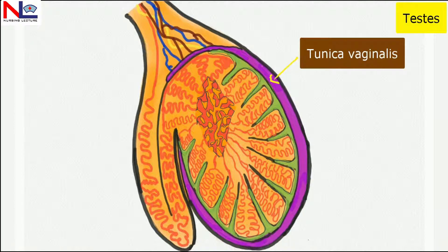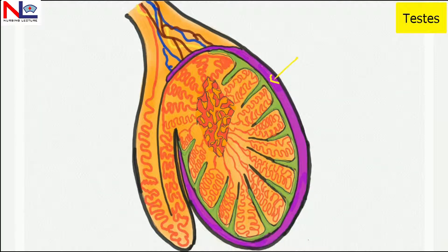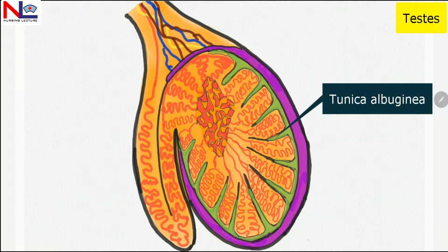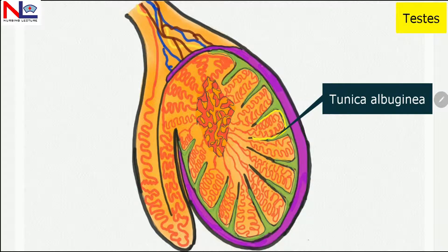At the lower end, it forms a sac-like structure covering the testes. Internal to this is the lining termed the tunica albuginea, which is a white capsule-like structure that forms septa or divisions internally. Here you can see these septa form many compartments within the testes, termed lobules.